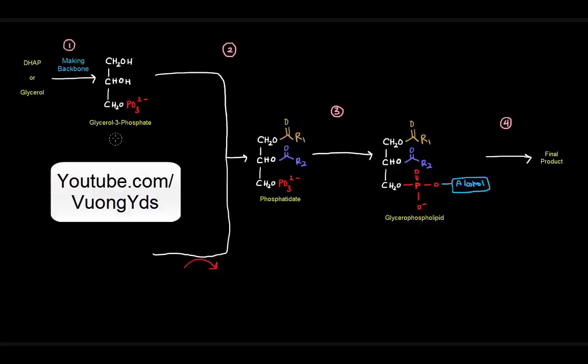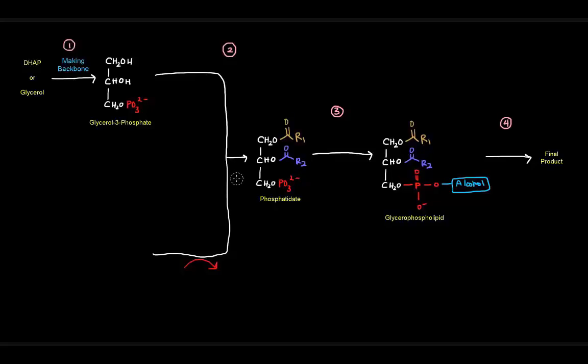Once we have glycerol 3-phosphate, we want to take that to form phosphatidate. How did we do that when we made triglycerides? Well, we just had acyltransferases basically add acyl groups, and that's what happens here as well. We take acyltransferases to make those ester linkages to those acyl groups. Then we have phosphatidate. That's the common precursor.